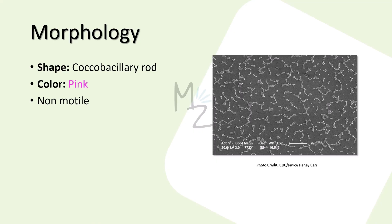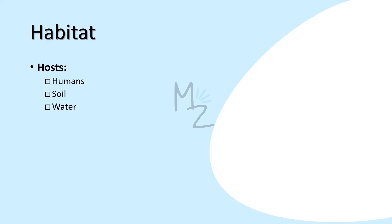Morphology: as we discussed in the introduction, Acinetobacter is a coccobacillary rod. It is pink-colored because it is gram-negative, and it is non-motile. This is how Acinetobacter looks under the microscope.